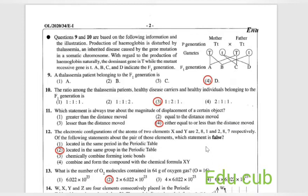Eleventh question: which statement is always true about the magnitude of displacement of a certain object? Answers are greater than the distance moved, equal to distance moved, lesser than the distance moved, either equal or less than the distance moved. If we are considering the magnitude of displacement of a certain object, it is not greater than, it can be equal or less than. So answer is either equal to or less than the distance moved.